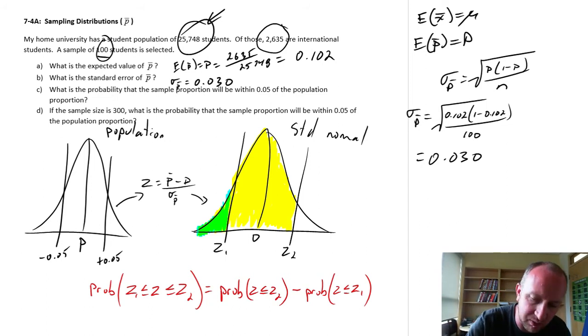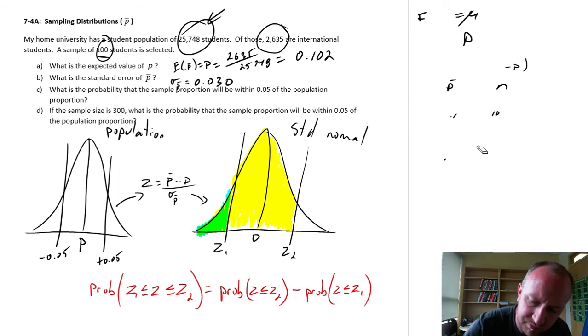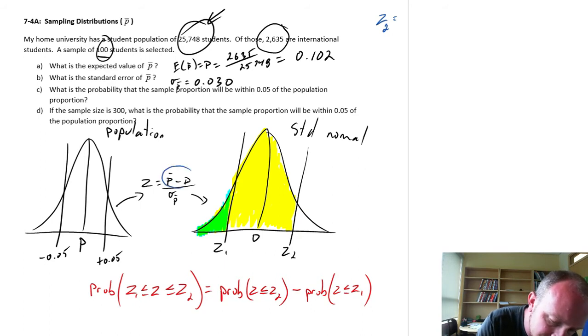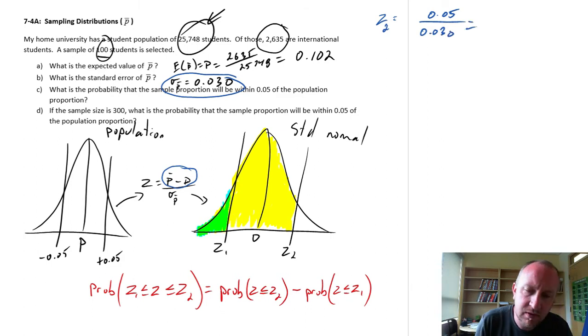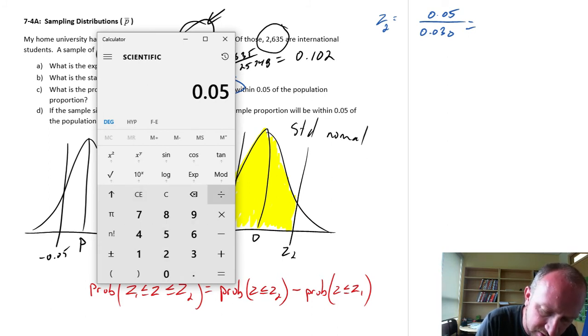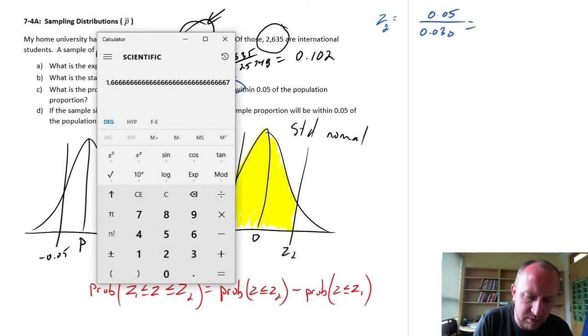So we need to figure out what is z1 and z2. I'm just going to clean up some space over here. So z2, let's start with z2. Our difference, this space between p and p bar, this numerator, is plus 0.5 and negative 0.5. So for z2, that interval is positive 0.5 divided by the standard error, which we've calculated here already, 0.030. So this is 0.05 divided by 0.03, which is 1.67.